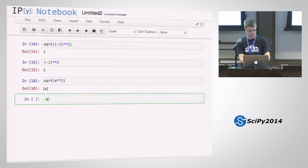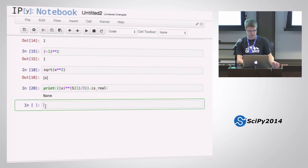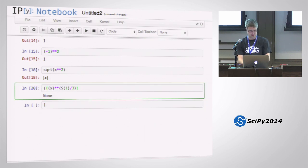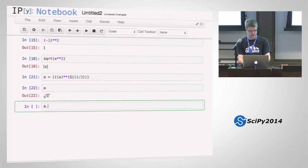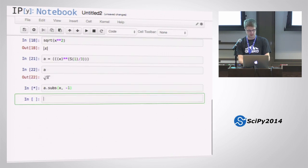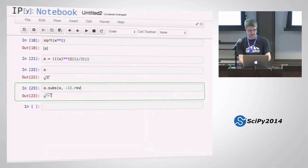Earlier, we were wondering why x to the one-third, so this thing here, we wanted to know if this is real. And it gives none here. We print this. And the reason is that if we take, for example, negative one to the... Well, let's take this expression here. We have too many parentheses there. So this. Let's do a dot subs x with negative one. Well, that's the cube root of negative one. But if I evaluate that, what is that? This is a complex number.